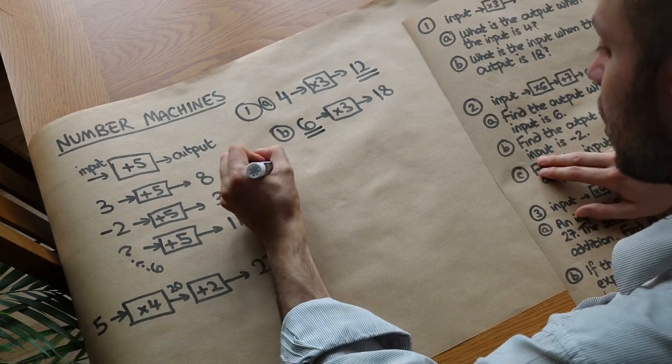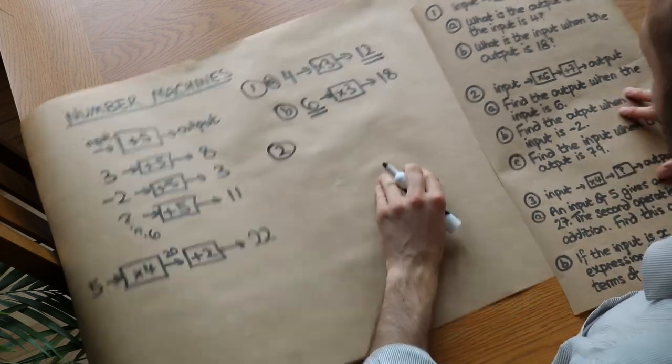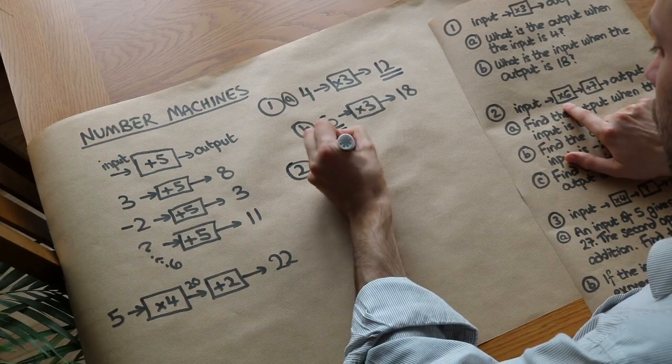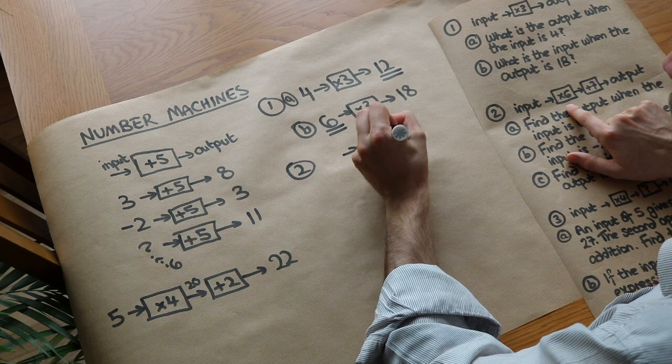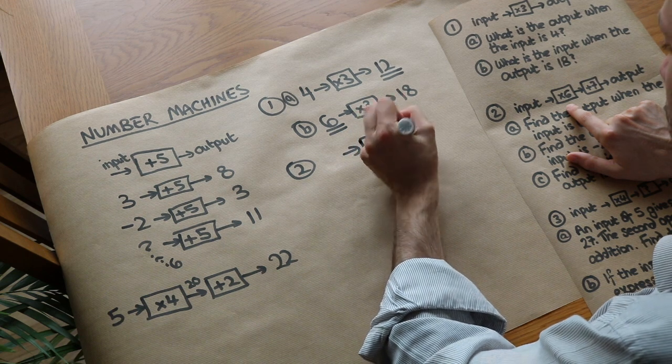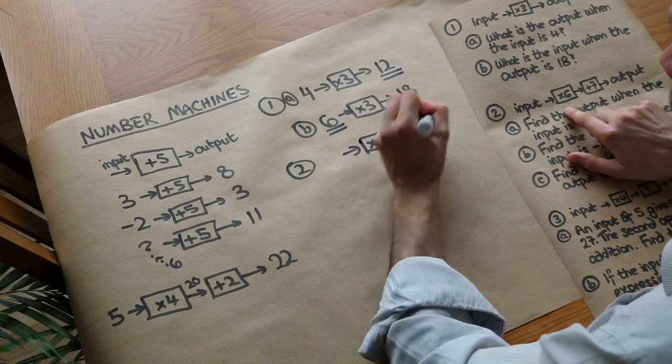Now let's go on to question 2. We've got an input and then it's fed through two number machines. We've got times 6, then the output of that is fed as the input into the next number machine which is plus 7, and then we've got some output.